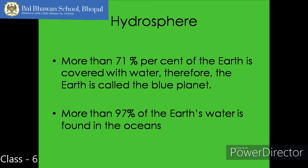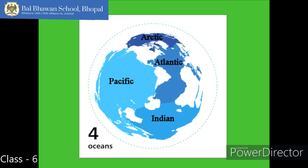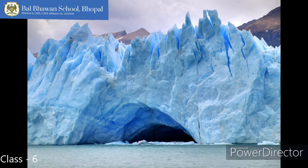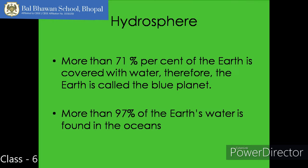Moving on to hydrosphere. The Earth is called the Blue Planet, and more than 71% of the Earth is covered with water. Hydrosphere consists of water in all its forms. More than 97% of the Earth's water is found in the oceans and is too salty for human use. A large portion of the rest of the water is in the form of ice sheets and glaciers or under the ground, and a very small percentage of water is available as fresh water for human use.